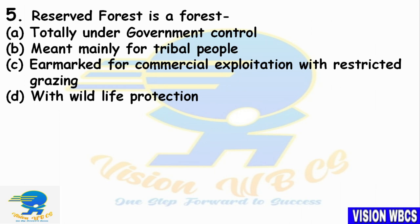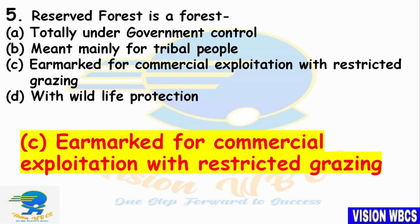Fifth question: Which type of forest is known as Reserved Forest? Option A — Totally under government control. Option B — Meant mainly for tribal people. Option C — Earmarked for commercial exploitation with restricted grazing. Option D — With wildlife protection. The right answer is Option C: Reserved forest is earmarked for commercial exploitation with restricted grazing allowed.